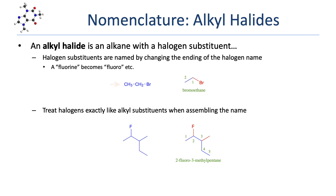The first step is to always find the parent chain. In this first example, the longest carbon chain is a 2-carbon chain, so this is going to be an ethane derivative. We've replaced one of the hydrogens on ethane with a bromine, and the substituent name for bromine is bromo, so we simply place that in front of the parent name. This is bromoethane. We number the carbons starting from the end closest to the substituent, so the 1-carbon is bonded to the bromine. Most chemists simply don't place the 1 in the name since there's no ambiguity.